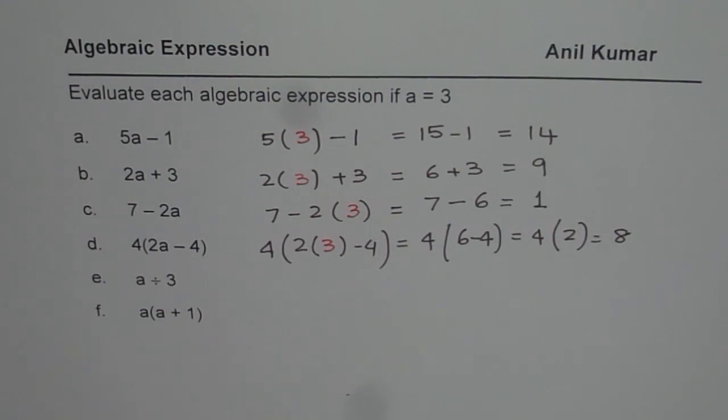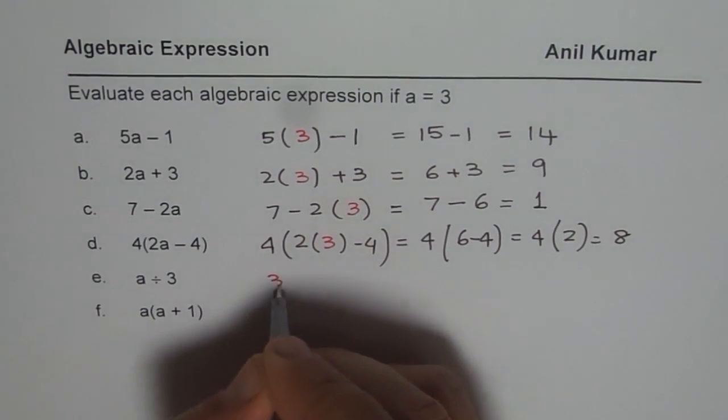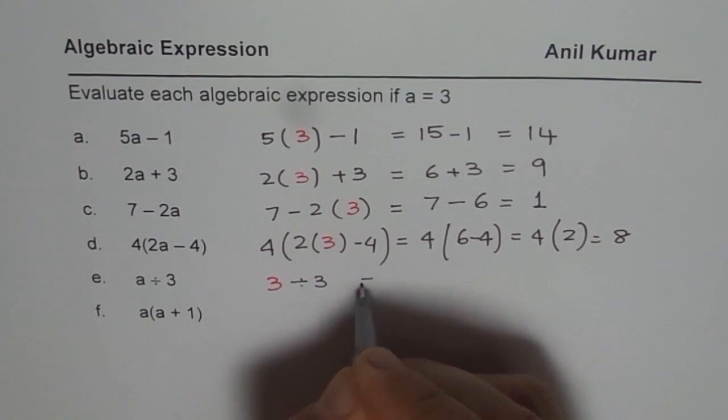The next one is a divided by 3. a is 3 for me, so I will write 3 for a. Now a is 3, so 3 divided by 3. What do I get? I get just 1.